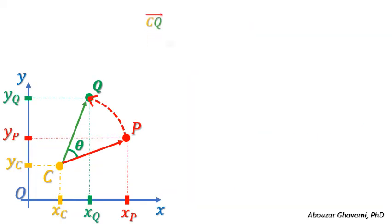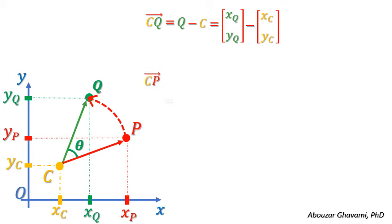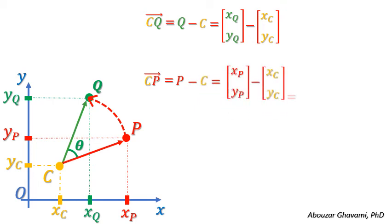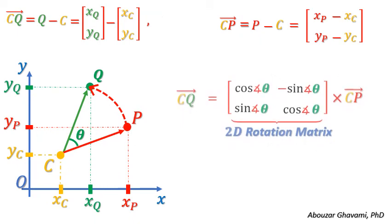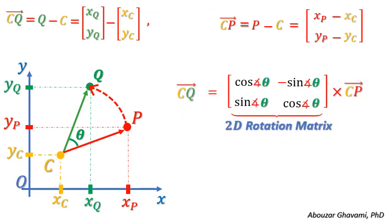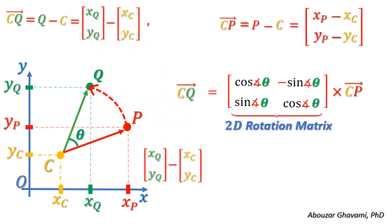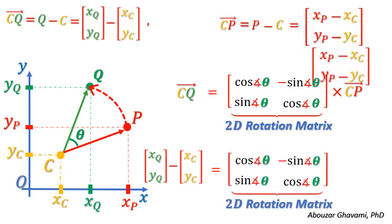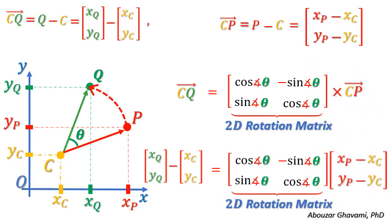The coordinates of vector CQ equal the coordinates of its head Q minus its tail C, that is the vector (XQ, YQ) minus the vector (XC, YC). The coordinates of vector CP equal the coordinates of its head P minus its tail C, that is the vector (XP minus XC, YP minus YC). We obtained that CQ equals the 2D rotation matrix times CP. Substituting CQ and CP with their coordinates, we have the coordinates of point Q minus the coordinates of point C equal to the 2D rotation matrix with angle theta times the difference between rotating point P and center point C.